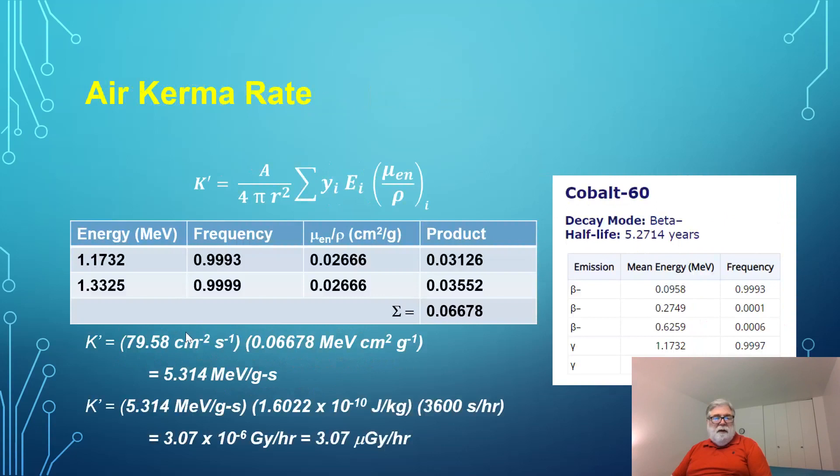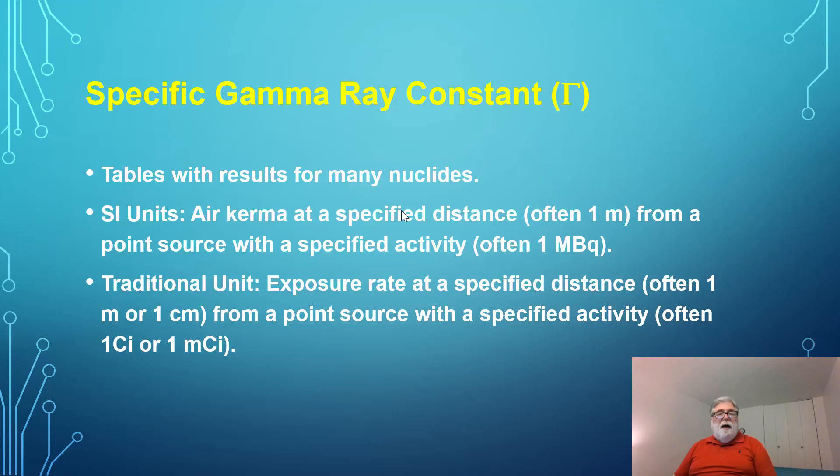So we have the coefficient 79.58 from the first page times this sum. We multiply them together, and the kerma rate is 5.314 MeV per gram second. Not a very useful unit. We're going to convert MeV per gram to joules per kilogram, and there are 3,600 seconds in an hour, going from a dose rate per second to per hour. When we multiply all these factors out, we end up with 3.07 times 10 to the minus 6 grays per hour, or 3.07 micrograys per hour. That's what the dose rate is. This is a relatively straightforward way to do it. I just wanted to give you an example of one worked out.